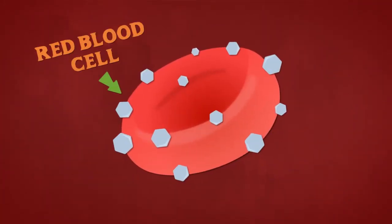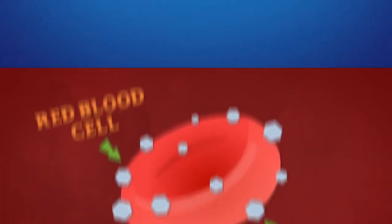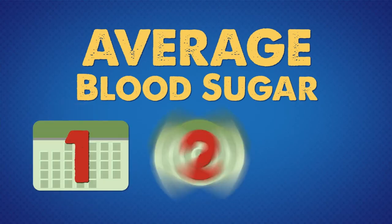Your A1C measures the amount of sugar in your red blood cells and gives an average of your blood sugar over a three-month period.